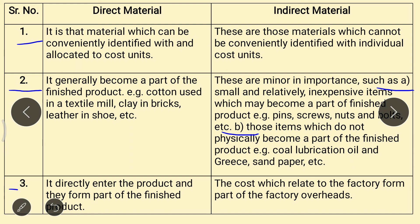Third point: for direct material, it directly enters the product and forms part of the finished product. In case of indirect material, the cost which relates to the factory forms part of the factory overheads.